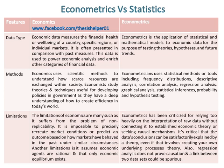The limitations of economics include the problem of non-replicability — it is impossible to precisely recreate market conditions or predict an outcome based on how markets have behaved in the past under similar circumstances. Another limitation is that it assumes economic agents are rational and that only economic equilibrium exists. Econometrics has been criticised for relying too heavily on the interpretation of raw data without connecting it to established economic theory or seeking causal mechanisms. It's critical that the data's conclusions can be satisfactorily explained by a theory. Also, regression analysis does not prove causation, and a link between two data sets could be spurious.